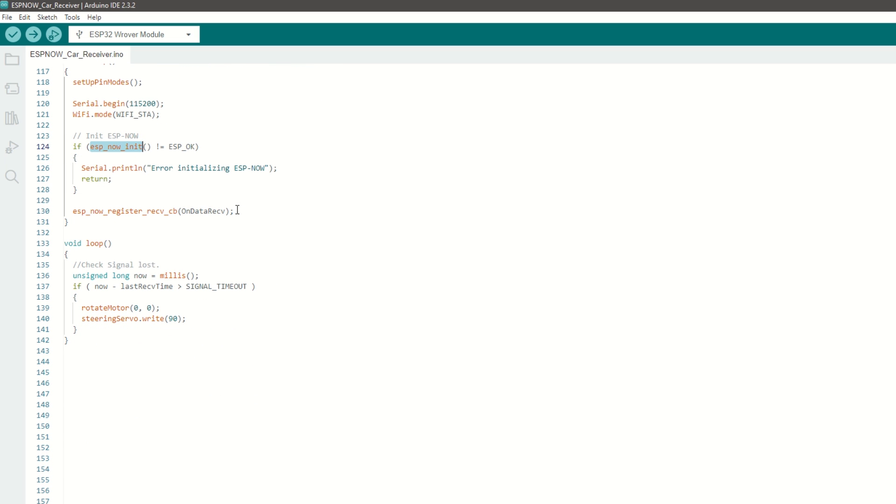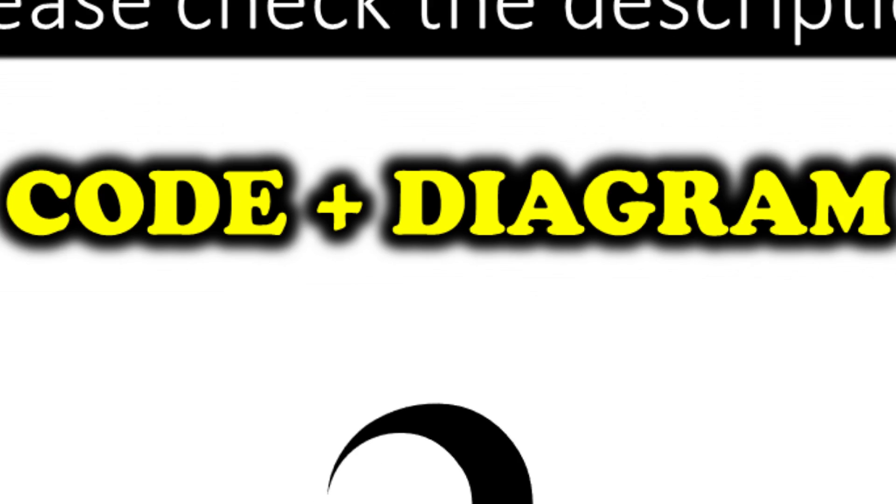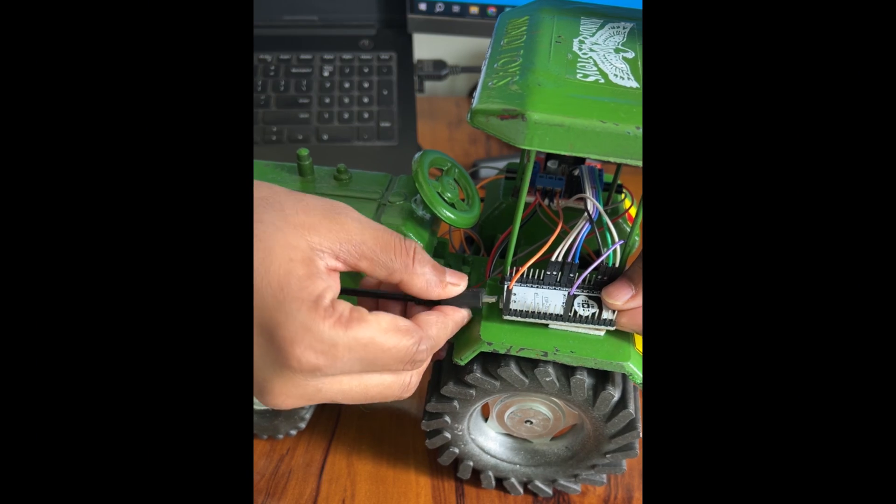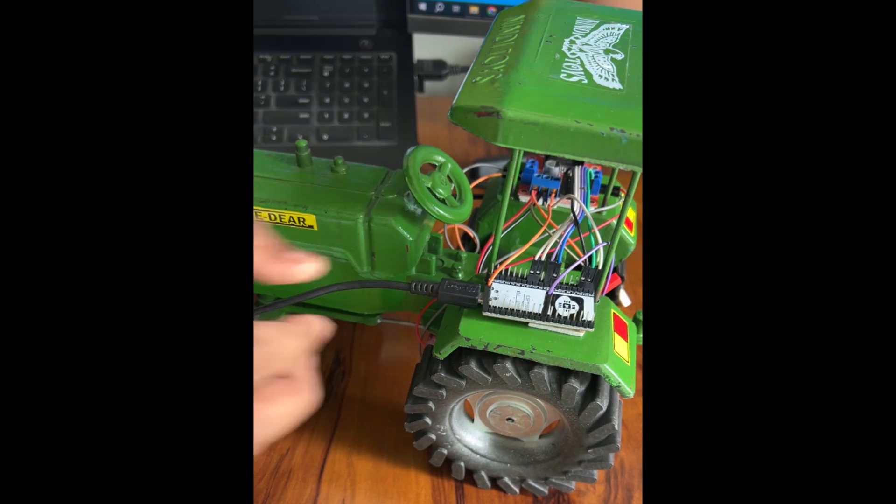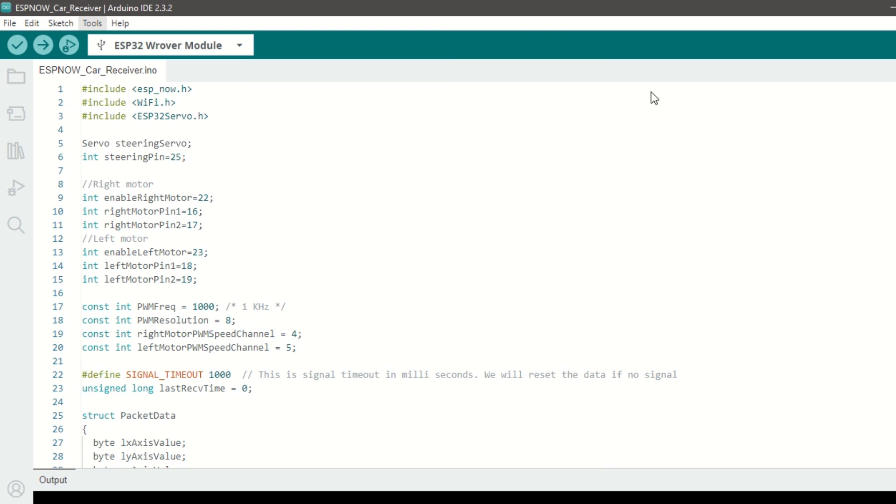Then init ESPnow. It will setup on data receive callback function. Inside loop function we will check if signal is timed out. If no data is received within 1 second then we will stop all the motors. I have provided the link to the code in the description below. You can upload it directly. Now let's upload the code. Connect ESP32 module to laptop using USB cable. Select ESP32 Dev module and port. Hit upload.